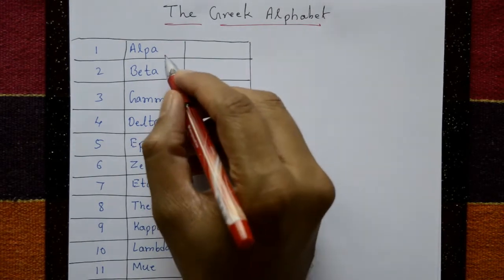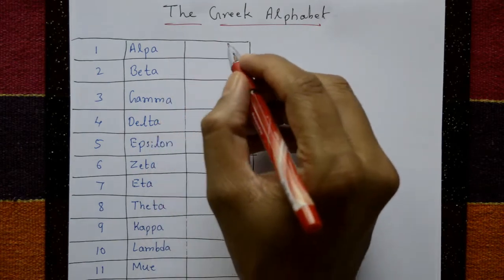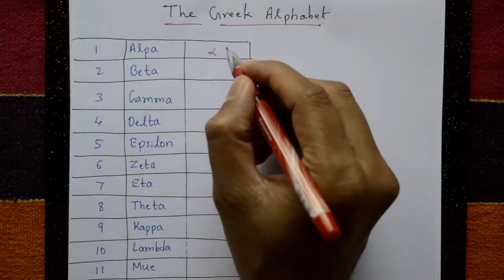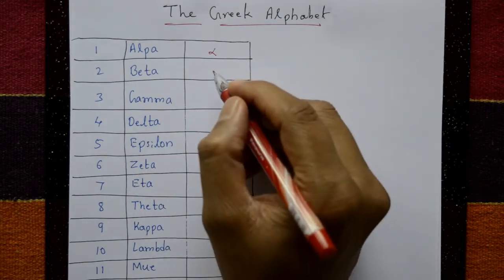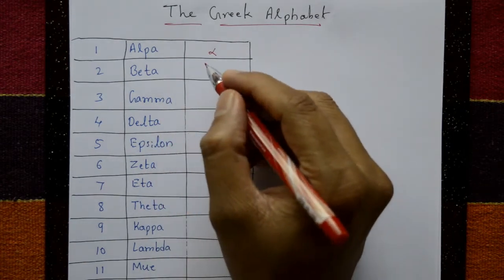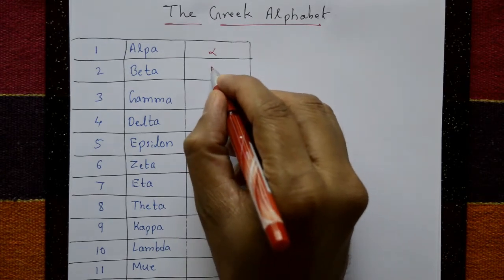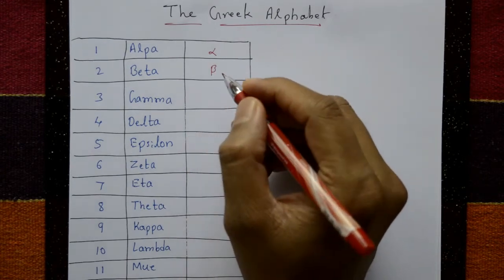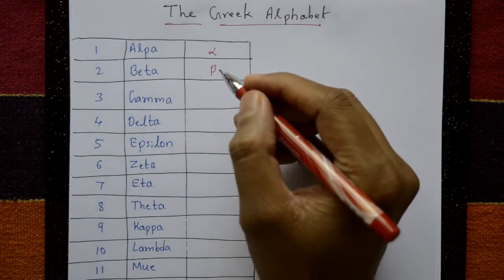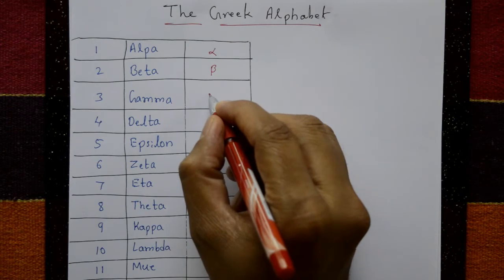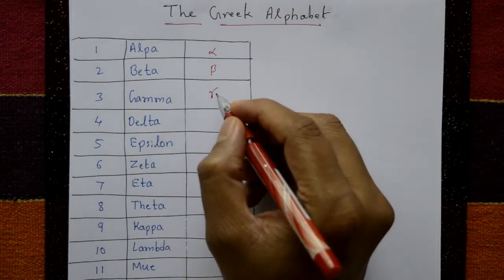The first one is alpha — alpha is written like this. The second one is beta. The third one is gamma — gamma is written like this.